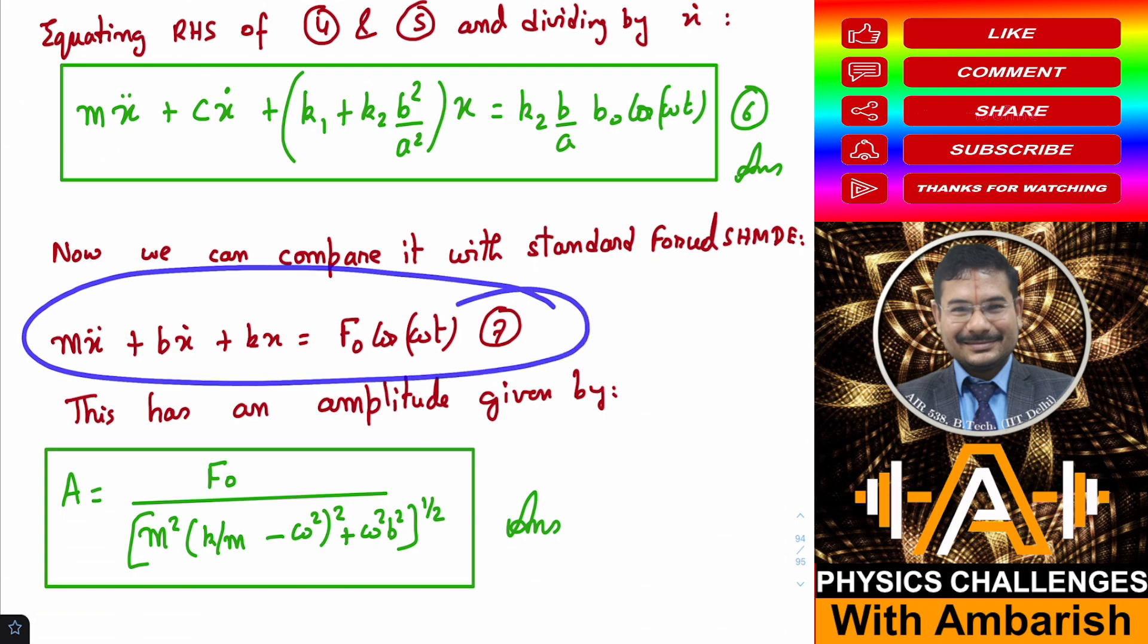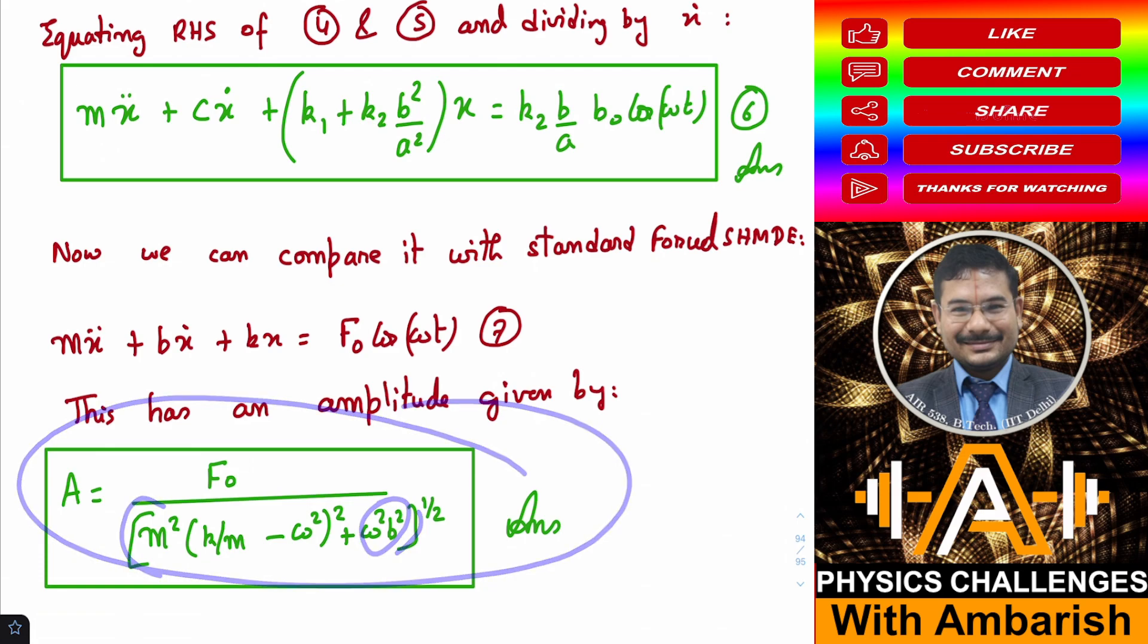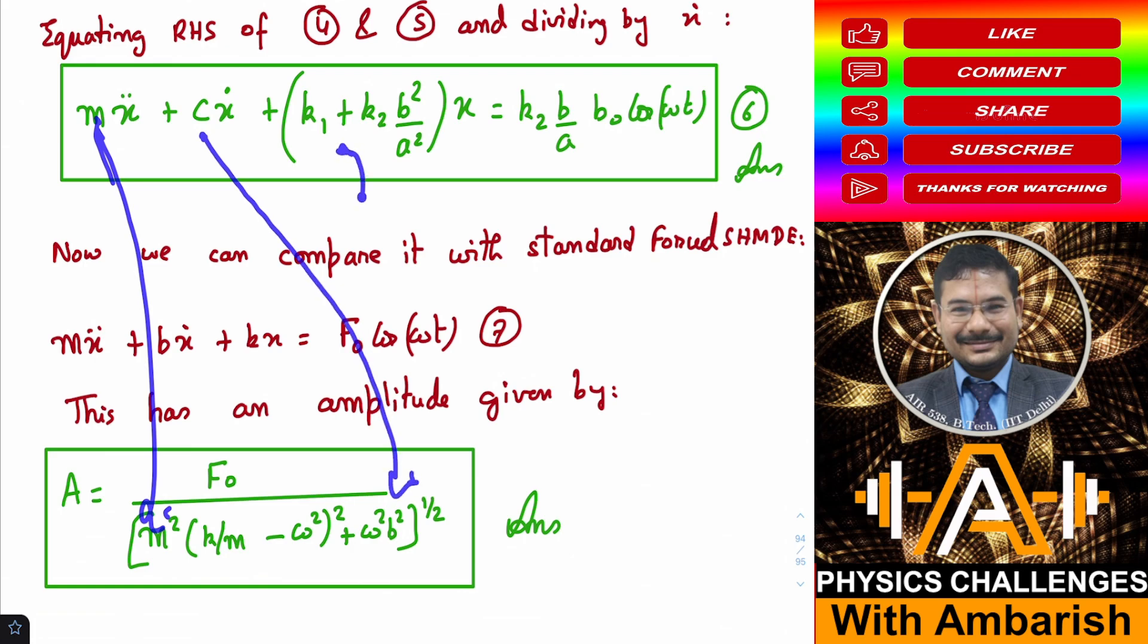Equation 7 has got a standard solution which is given in NCERT and I have copied the expression as it is from NCERT. The amplitude is F_0 divided by [M²(K/M - ω²)² + ω² B²]^(1/2). This is the natural frequency squared, K by M minus omega squared where omega is the driver frequency. You can substitute everything: M is known, B is your C, K is your K1 plus K2 B²/A², and F_0 is K2 B/A into B_0. I did not write it out in the expanded form to avoid the expression being messy.